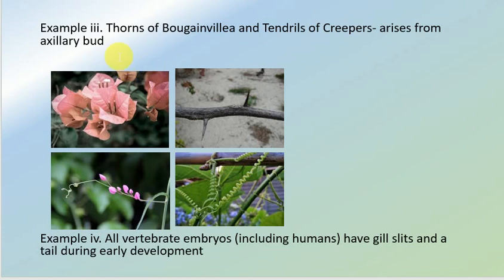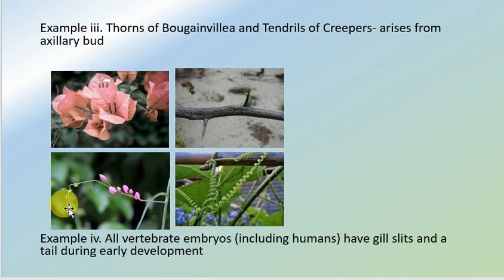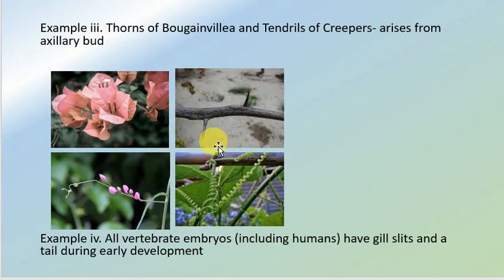In plants, the first example is the thorns of bougainvillea and the tendrils of creepers. Both arise from the axillary bud, but perform different functions. The spines of bougainvillea perform the function of protection, while the tendrils perform the function of climbing. These are also examples of homologous organs.